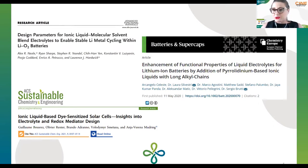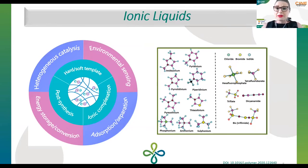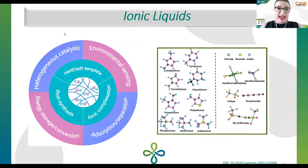Some solar cells are also using ionic liquids as electrolytes. We have many different applications related to ionic liquids: we can use them for heterogeneous catalysis, for environmental sensing, for adsorption and separation of CO2, for energy storage and conversion, and as hard and soft templates for inorganic synthesis.